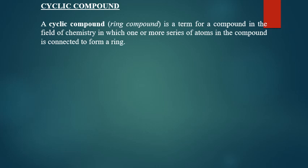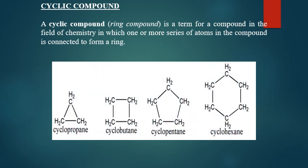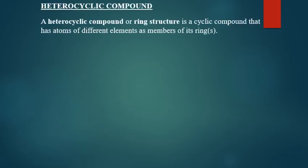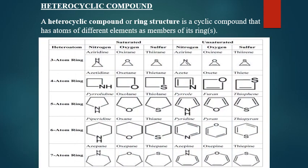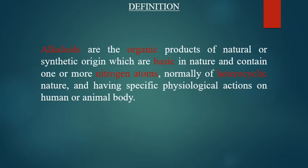We also mentioned nitrogen atoms and heterocyclic compounds. A cyclic compound is one in which one or more series of atoms in the compound is connected to form a ring. A heterocyclic compound is a cyclic compound that has atoms of different elements as members of its ring. So alkaloids are organic products of natural or synthetic origin, basic in nature, containing one or more nitrogen atoms normally of heterocyclic nature, having specific physiological actions on the human or animal body.